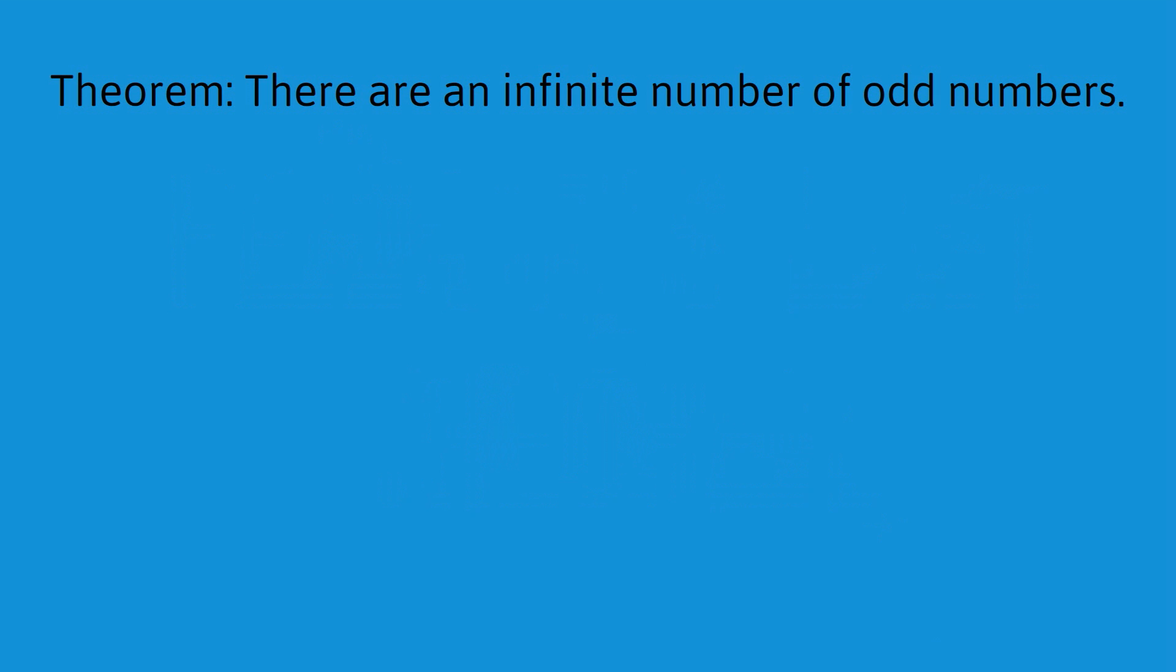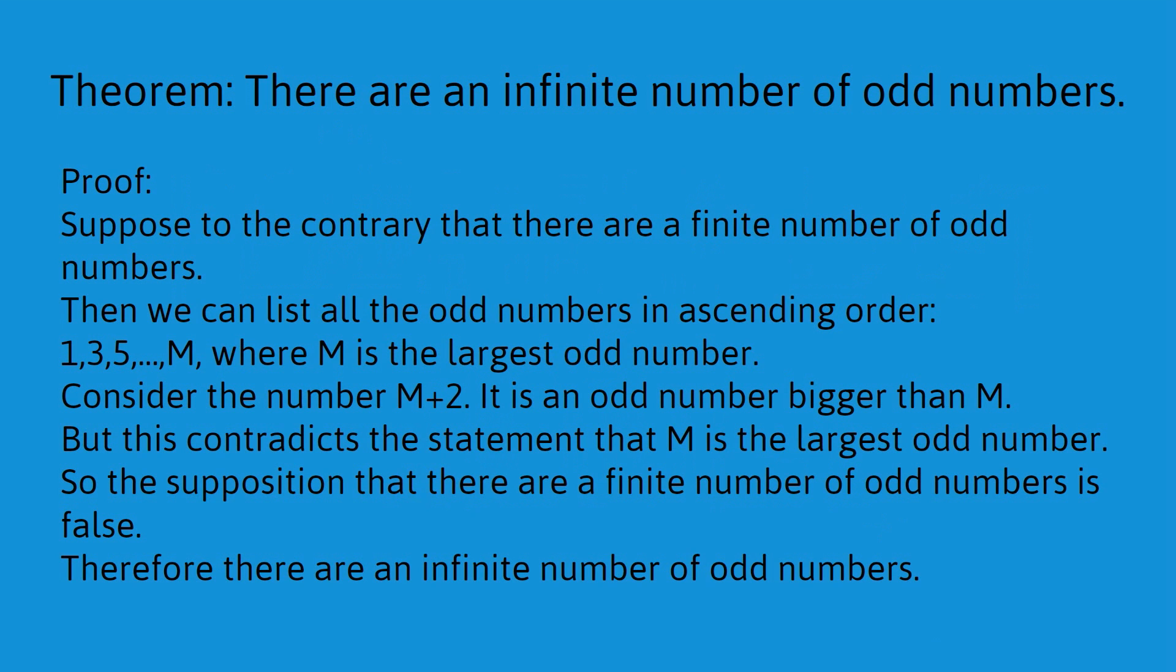So, here's a trivial example. Theorem: There are an infinite number of odd numbers. So, let's look at the proof. We start out by supposing to the contrary that there are a finite number of odd numbers. So, we haven't proven that. We're just making that supposition. Now, we list a whole lot of logical statements that follow from our supposition. So, if there are a finite number of odd numbers, then we can say, then we can list all the odd numbers in ascending order.